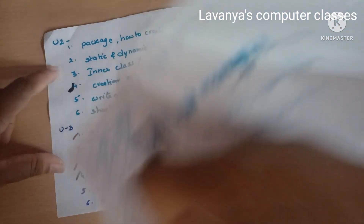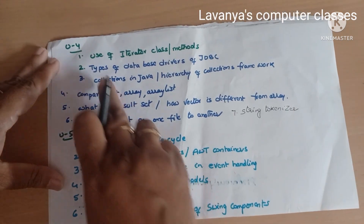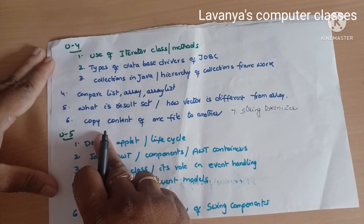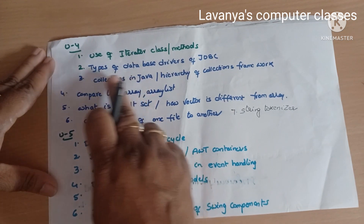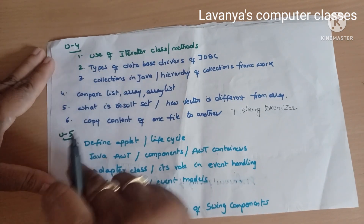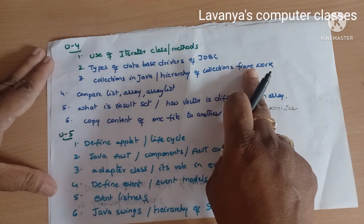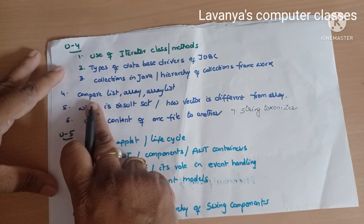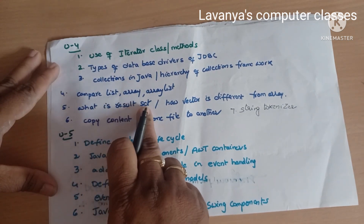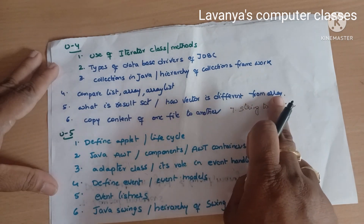Unit 4 covers iterator classes and methods. JDBC concepts are very important — explain what is JDBC and types of JDBC drivers. Collections in Java and the hierarchy of the collections framework are important questions. Also compare List and ArrayList, what is ResultSet, and how Vector is different from ArrayList.